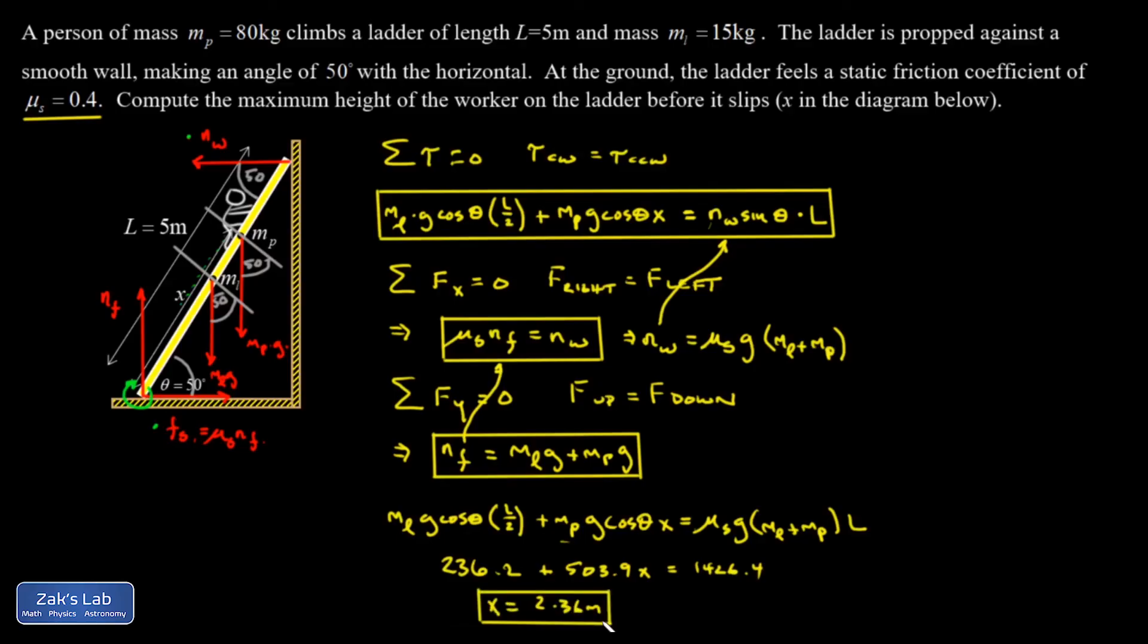Solving for X, I get 2.36 meters, which means the person doesn't even make it halfway up the ladder before it begins to slip.